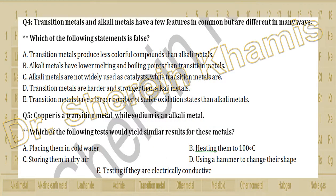Question 4 says: transition metals and alkali metals have a few features in common but are different in many ways. Which of the following statements is false? We have: A) transition metals produce less colorful compounds than alkali metals; B) alkali metals have lower melting point and boiling point than transition metals — this seems truly right.